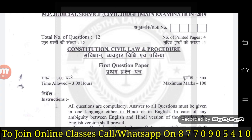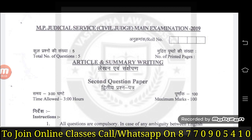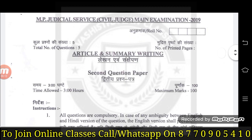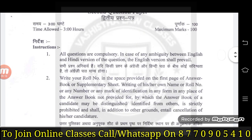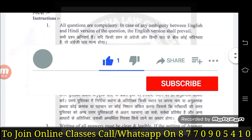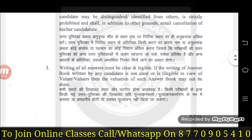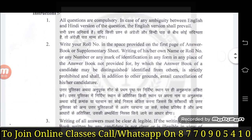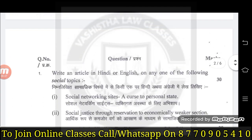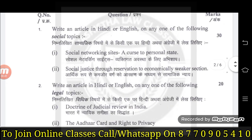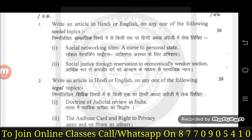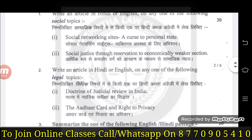Now let's see the second paper. This is the article and summary writing paper, 100 marks. Read the instructions. This is article writing - write an article in Hindi or English on any one of the following social topics. This social topic question is 30 marks. Then there is a Hindi and English legal topic question which is the second question of 20 marks. So first question is social topic of 30 marks, and second question is legal topic - total 30 and 20 = 50 marks so far.